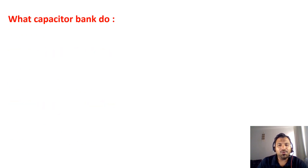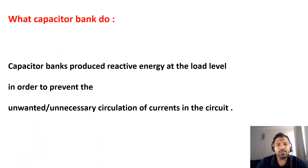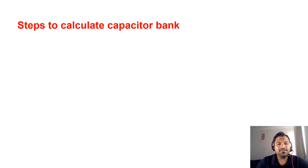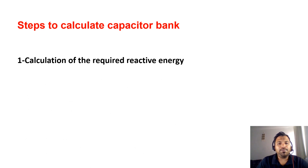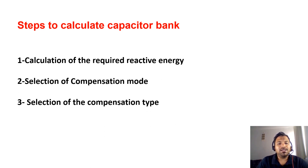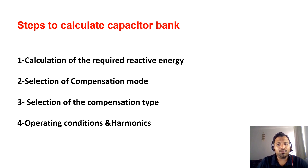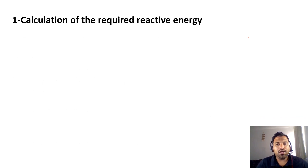What can capacitor banks do? Capacitor banks produce reactive power in the network in order to prevent unnecessary circulation current in the circuit. The capacitor bank calculation process is a four-step process: Step 1 is finding the reactive power, Step 2 is the compensation mode, Step 3 is the compensation type, and Step 4 is operating conditions and harmonics. Let's see these in detail.